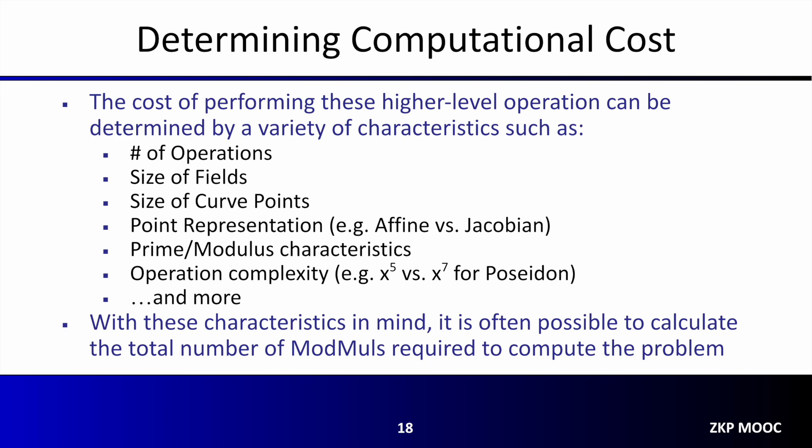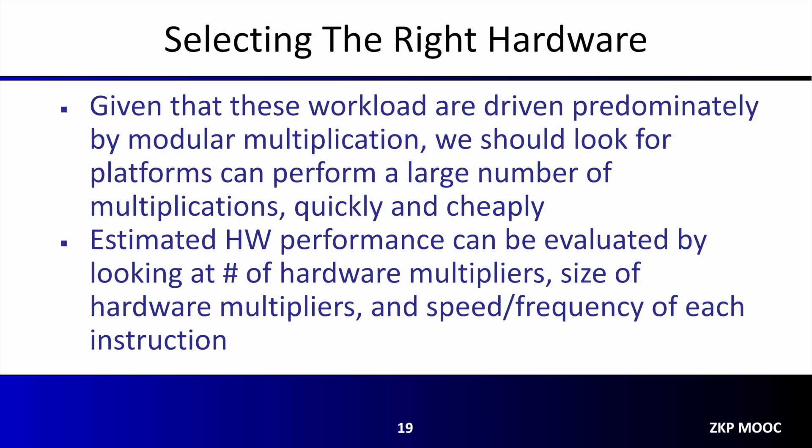With knowledge of the calculations that need to be performed, the next step of hardware acceleration is selecting the right hardware for the job. Given that these workloads are driven predominantly by modular multiplication, we should be looking for hardware platforms that can perform a large number of multiplications quickly and cheaply. The estimated performance of a given hardware platform can be evaluated by looking at the number of hardware multipliers on the platform, the size of the hardware multiplier, and the speed and frequency with which each multiplier can be executed.